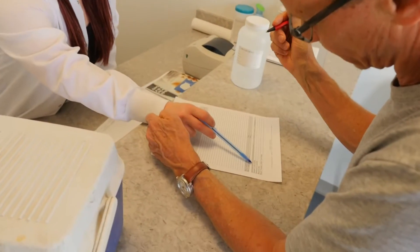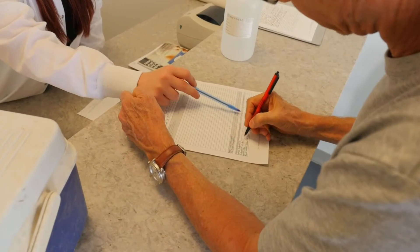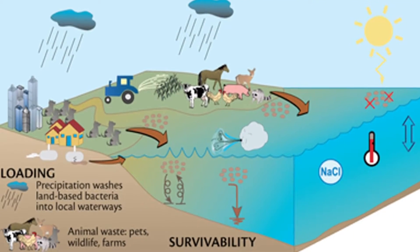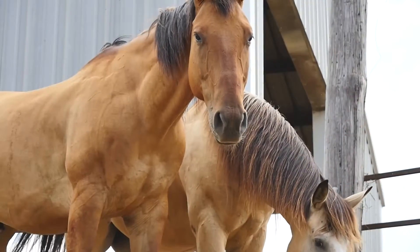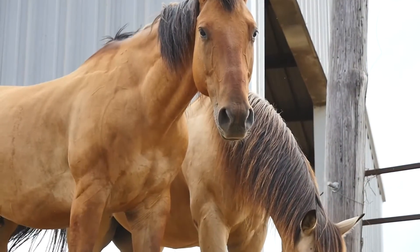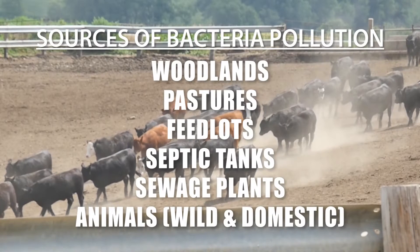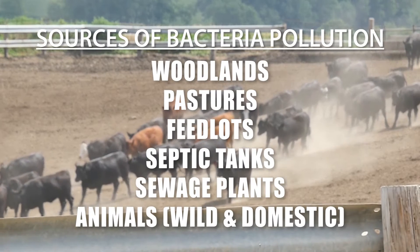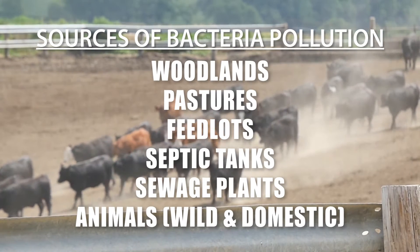Wells are routinely tested for coliform bacteria, which originates as organisms in soil or vegetation and in the intestinal tract of warm-blooded animals. The many sources of bacterial pollution include runoff from woodlands, pastures, and feedlots, septic tanks and sewage plants, and animals wild or domestic.